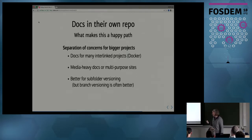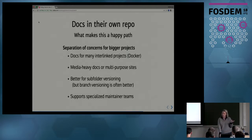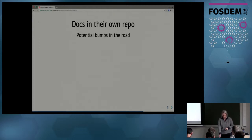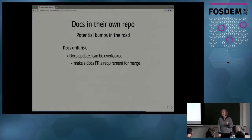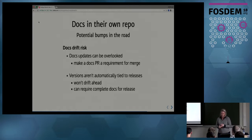Branch versioning is a better approach than subdirectory versioning in a separate repo — more efficient in general. A separate repo also supports specialized maintainer teams: if you've got code maintainers and docs maintainers as two separate groups, it's easier for them to manage their own repos. You can use Code Owners in GitHub to handle it all in one repo, but having two separate repos is sometimes nicer. One downside: docs updates can be overlooked the farther they are from the code. However, you can make a docs PR a requirement for merging a code PR. Versions also aren't automatically tied to releases, but you can prepare docs ahead of time and merge at release.